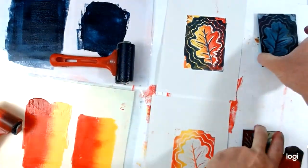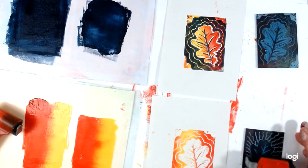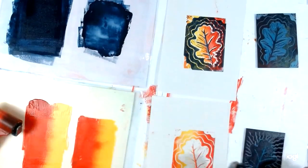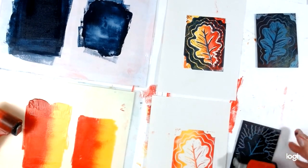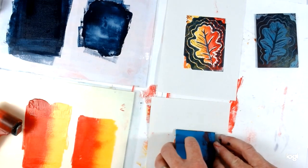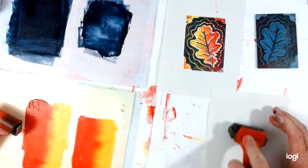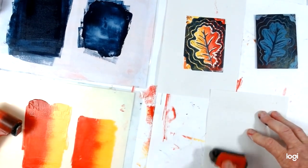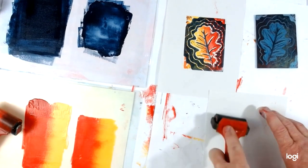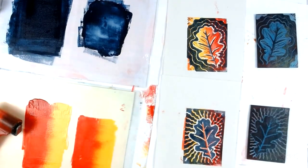So there we have one version. And now ink up the other one. Nice and even coating of fine sandpaper. Carefully place it over. Burnish. And there we have my second version. So that's a two block print.